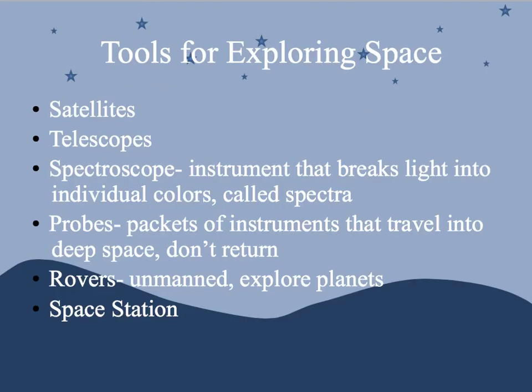We've got a bunch of different tools to explore space. We have satellites, telescopes, and a cool machine called a spectroscope that breaks light into individual colors. We have probes — packets of instruments we send out into space that collect information for us. We have rovers like the Mars rover Curiosity, which are unmanned and explore the planets. And we have our space station, situated out in space to collect data.